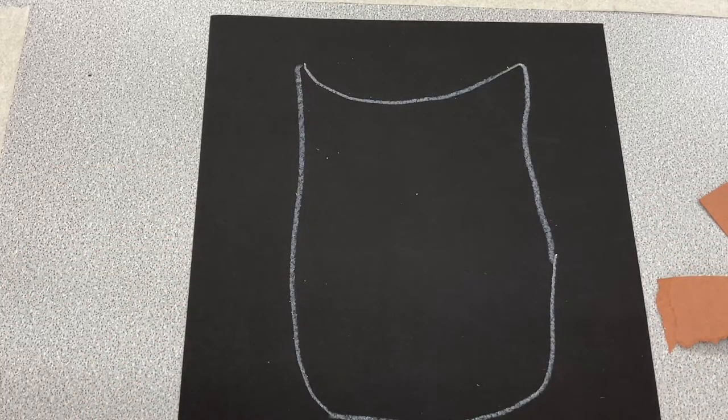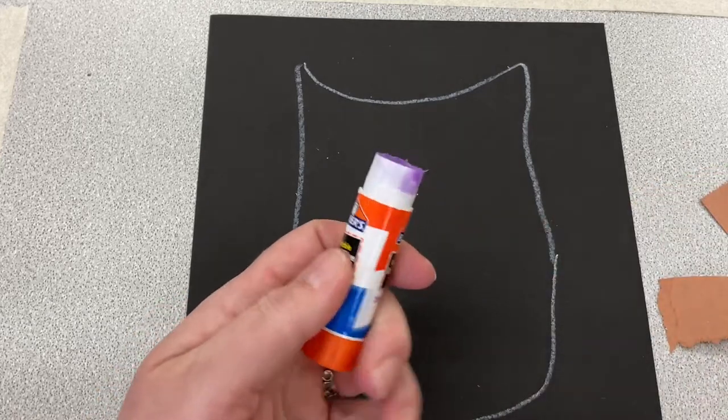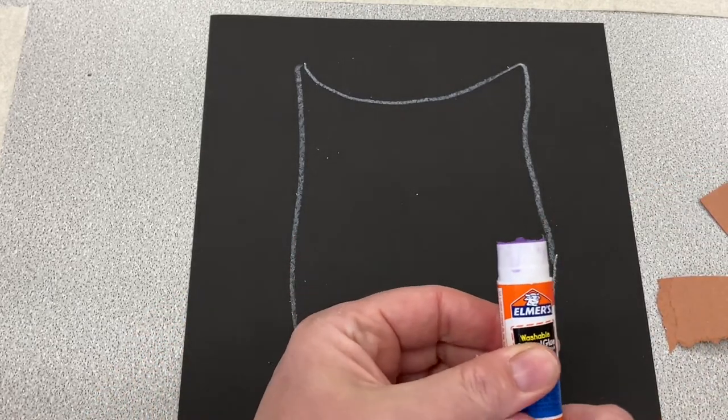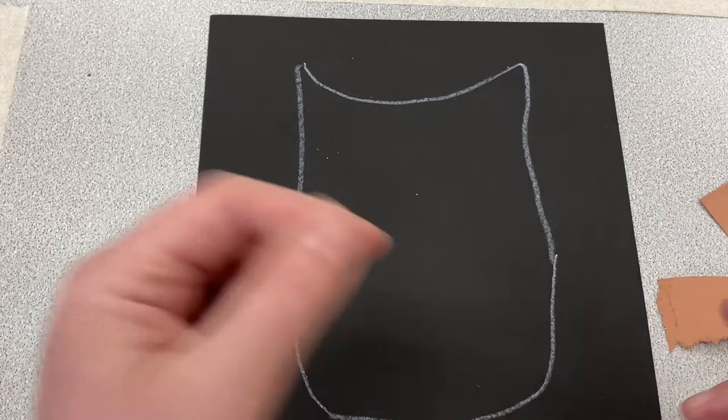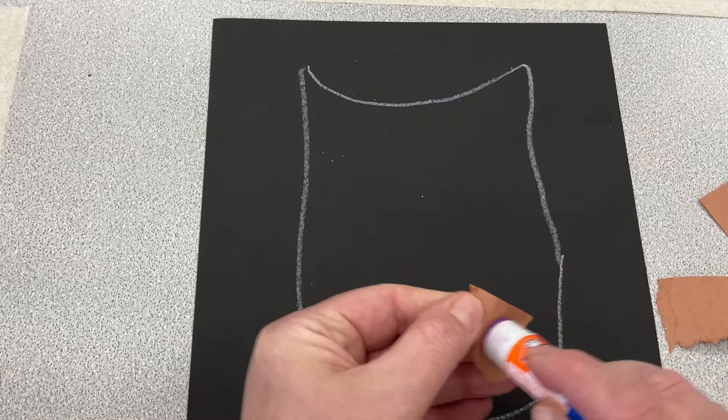Now it's time to glue. Take the cap off your glue stick. It's tough sometimes. And twist it up until the glue just pops its head out. Then we put glue on the back of our little piece.